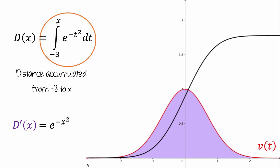We can see that the value of the velocity function tells us the slope of the accumulation function. And now, since the derivative of the accumulation function is equal to e to the negative x squared, this means that d of x, the accumulation function, is an antiderivative of e to the negative x squared.